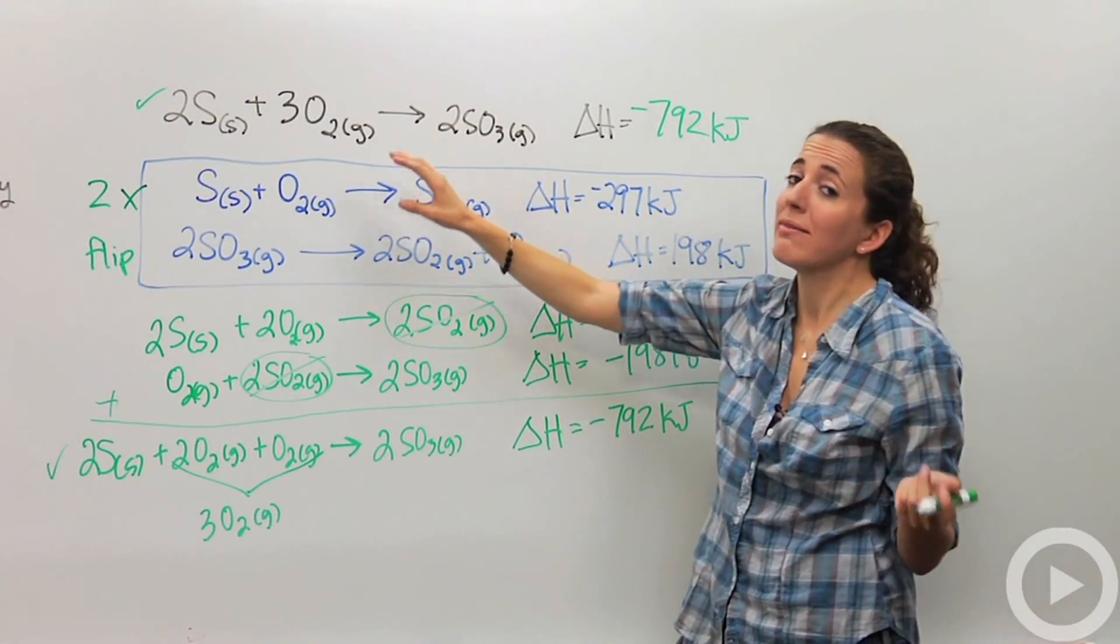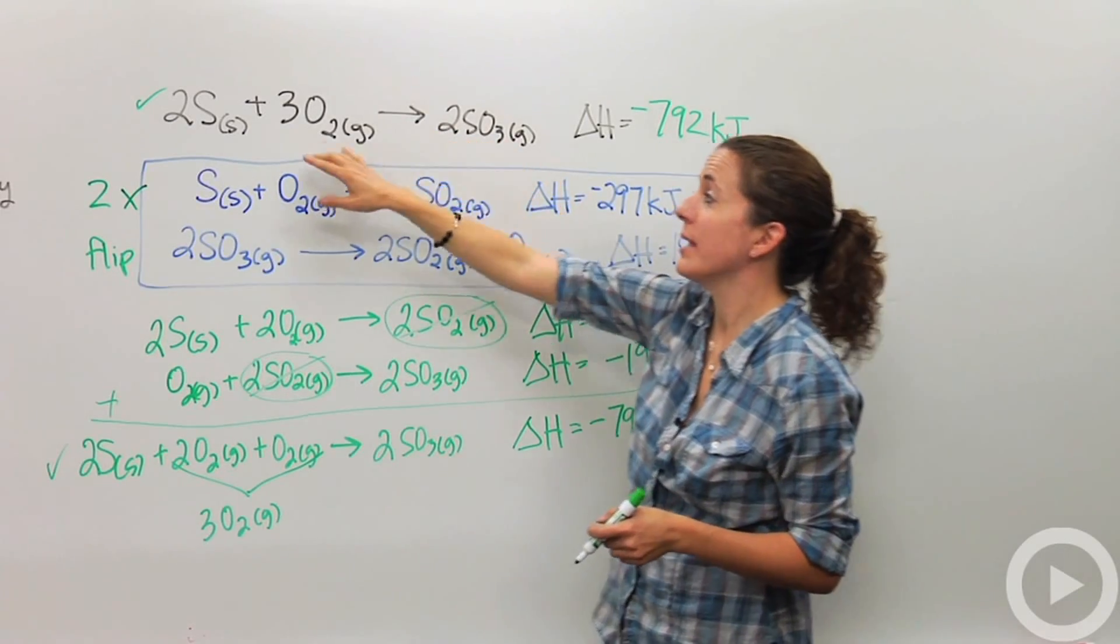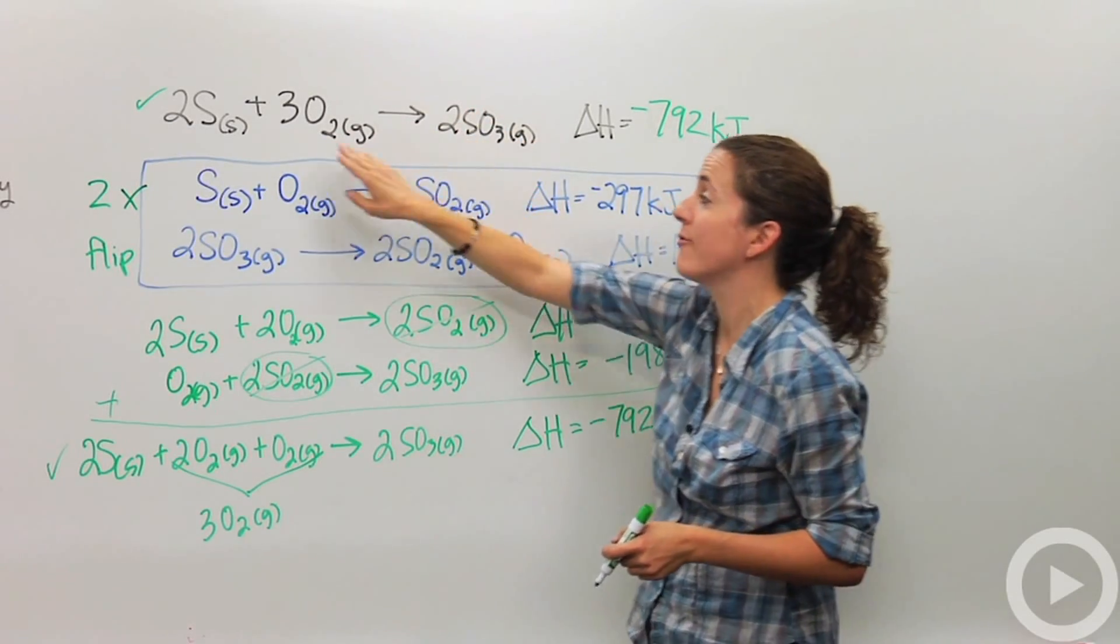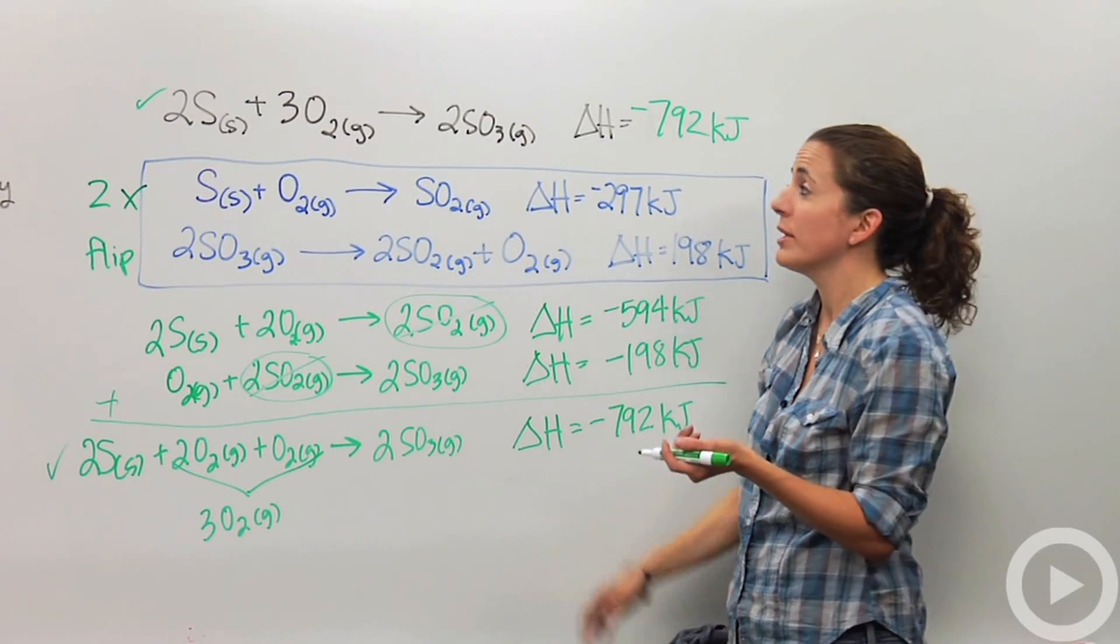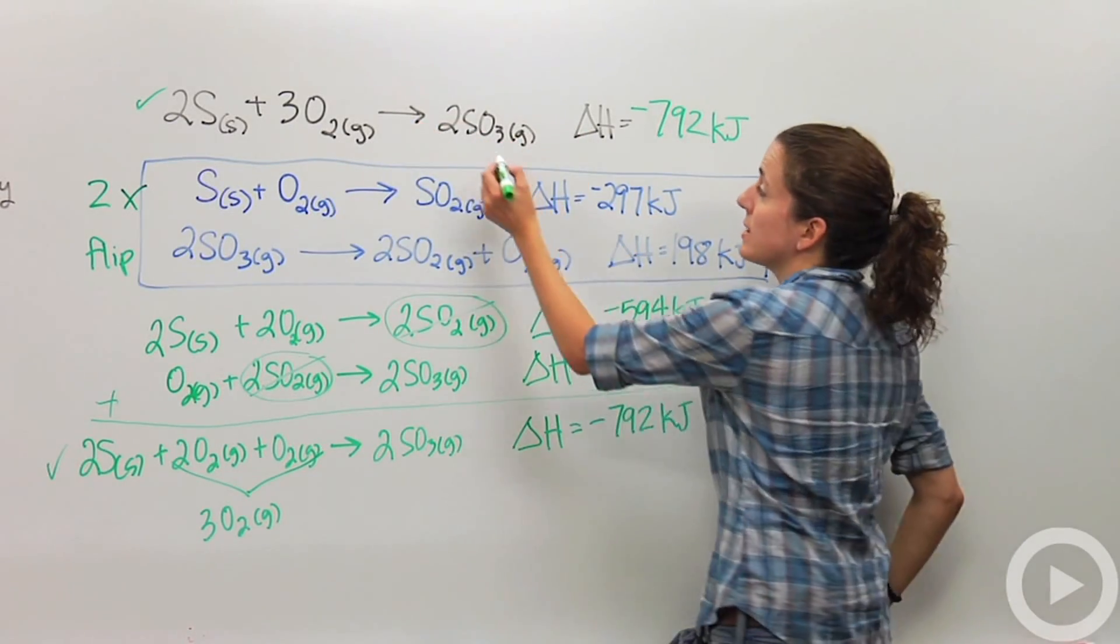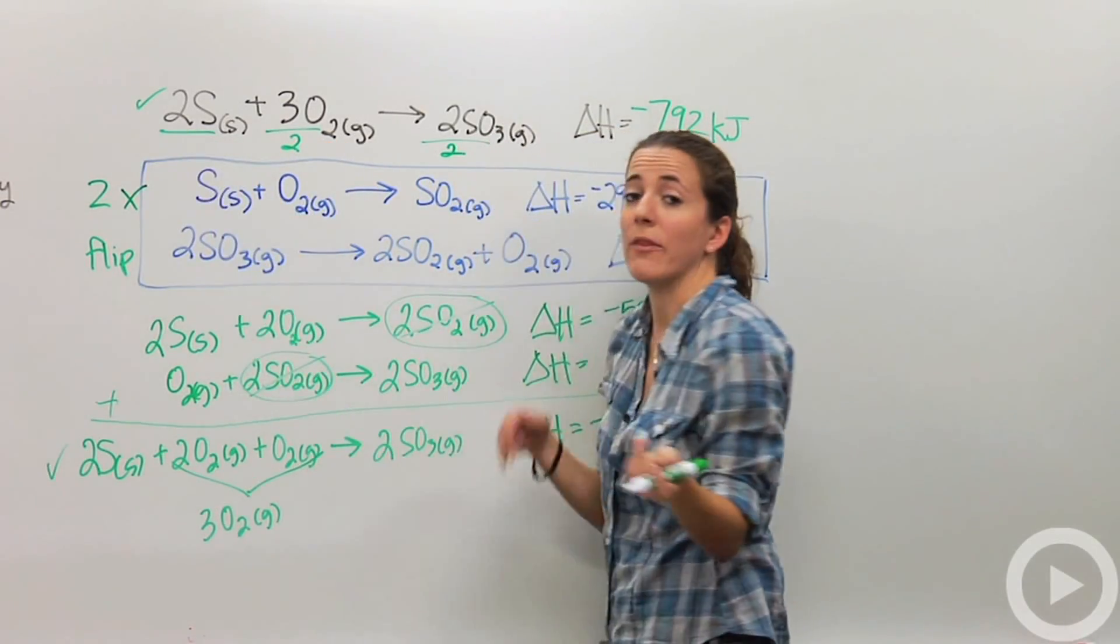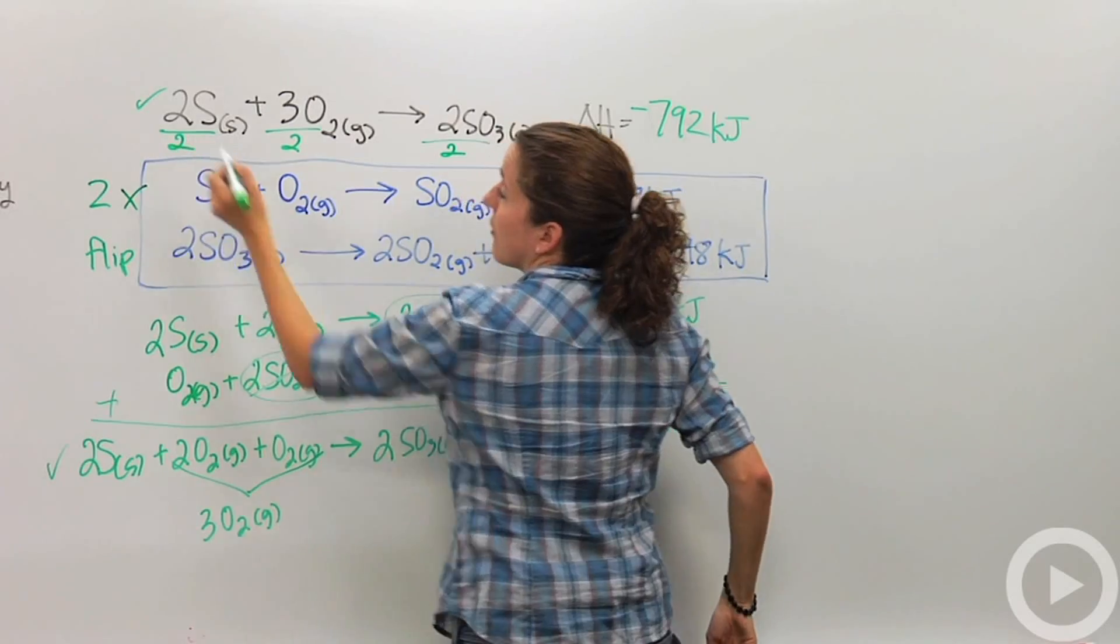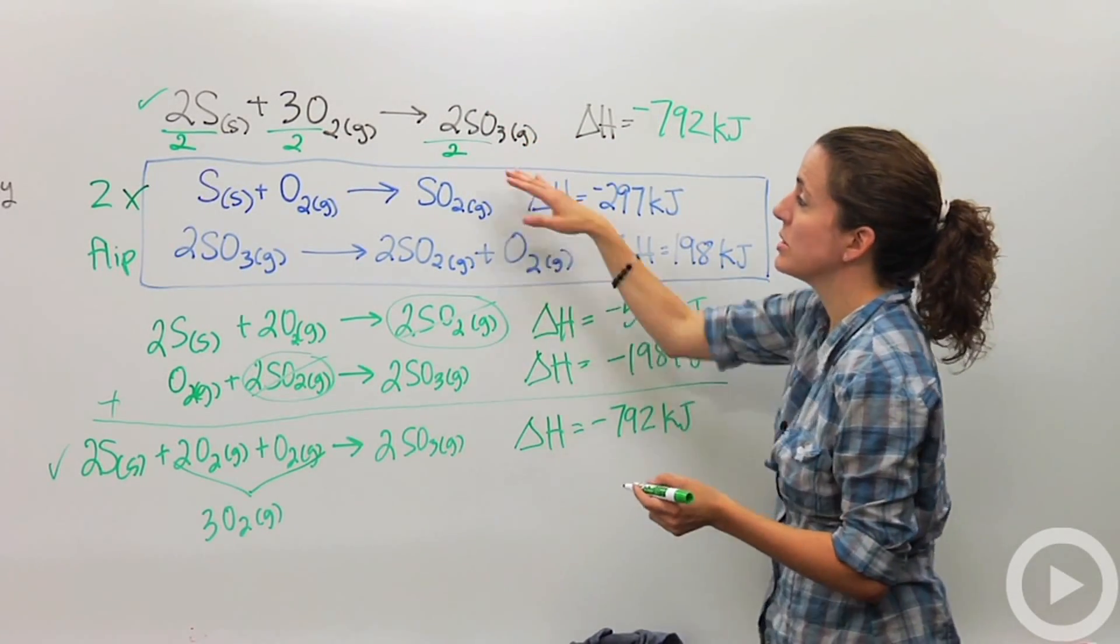But I'm also going to do one last thing. This is a formation reaction, meaning we're forming sulfur trioxide from its elements. So in order to do formation reactions, the best way is we want to get this to be one mole. So I'm going to divide the whole thing by two, because in formation reactions, if you want to learn more about them, there's a video on that as well. But formation reactions have one mole of the product, so we're dividing everything by two.